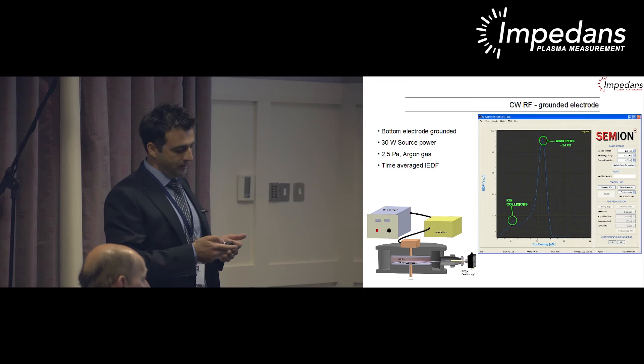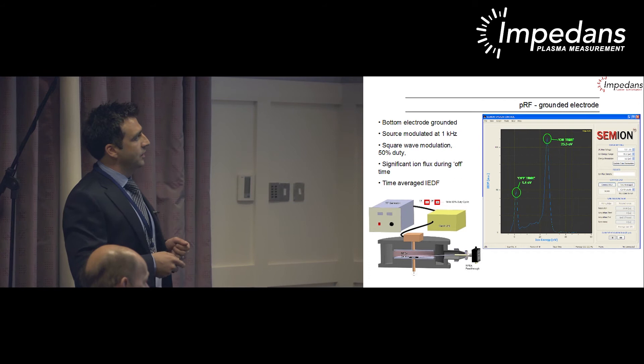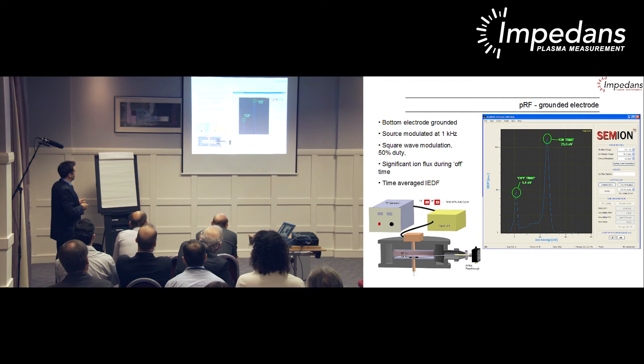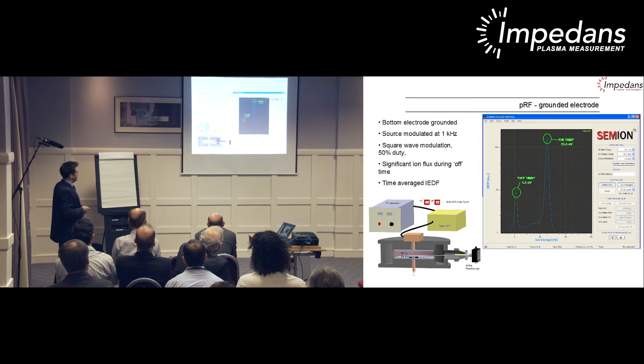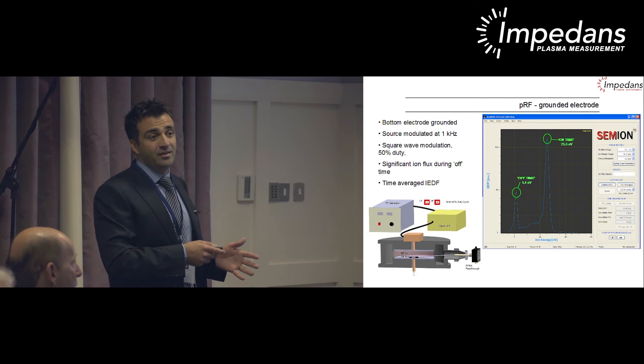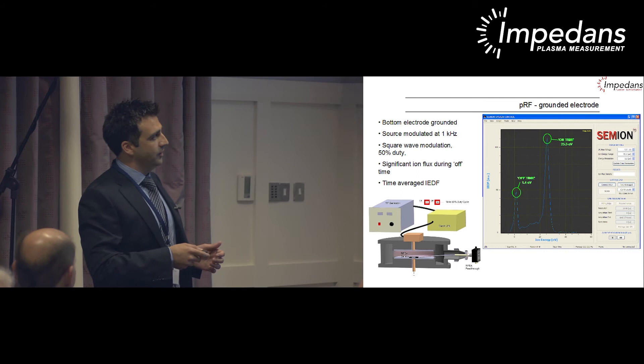First experiment: using continuous wave RF on the top electrode with the bottom electrode grounded produces a nice mono-energetic narrow ion energy beam reaching the analyzer. At relatively high pressure some ion collisions occur in the sheath, but the key point is that the RF bias on the top electrode doesn't really modulate the ion energy distribution, so changes seen when applying signals to the bottom electrode can be attributed to that bias.